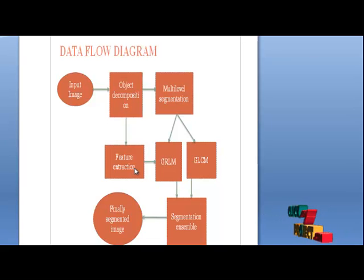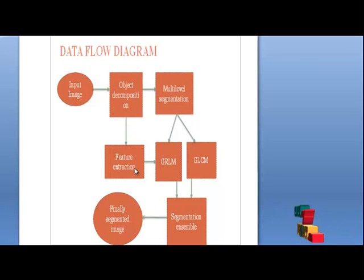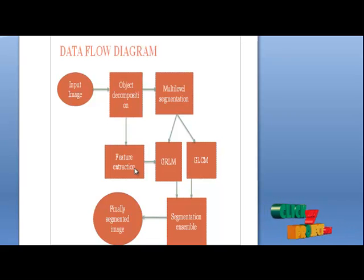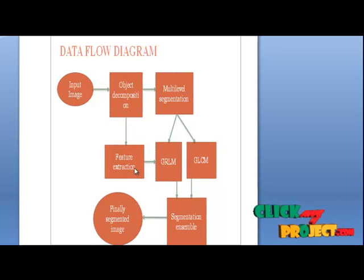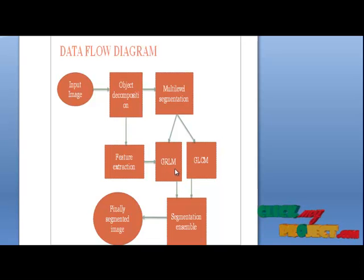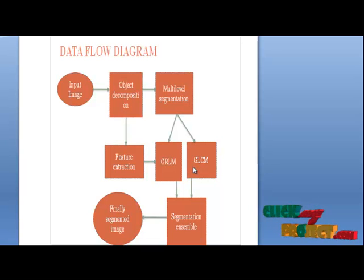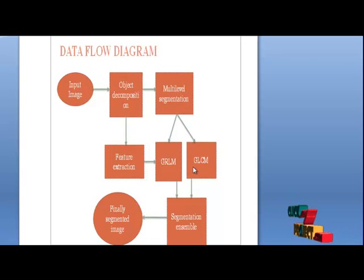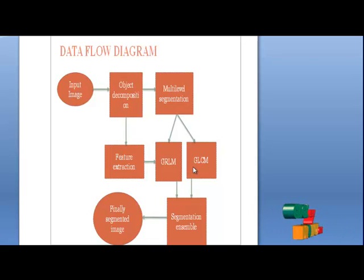The next process is feature extraction. Feature extraction in the proposed approach introduces a texture measure to quantify the spatial organization of components in a tissue. It transforms a tissue image from the pixel domain to the component domain and defines texture on the tissue components instead of pixel values. The next process is graph run-length matrix and gray-level co-occurrence matrix. The gray-level co-occurrence matrix is defined over distance and direction and makes use of graph traversals to measure the distance between objects for quantifying the distribution of tissue components.